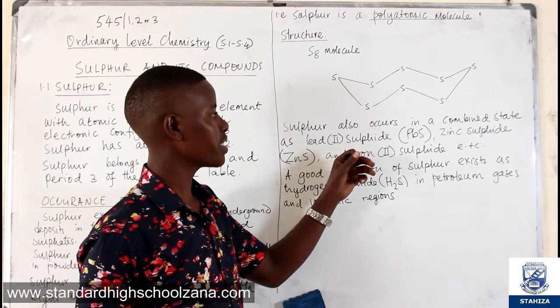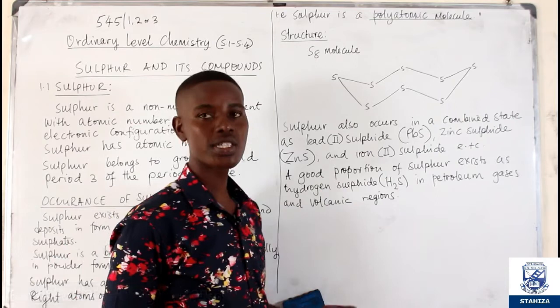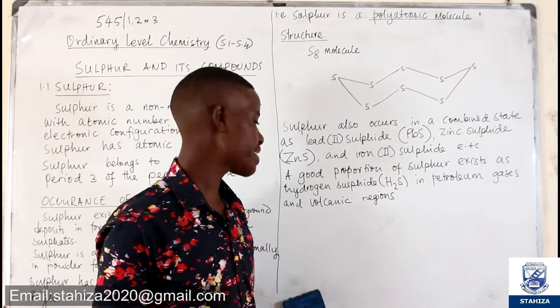The ores of sulfur include lead(II) sulfide, zinc sulfide, iron(II) sulfide, and iron disulfide — and those are the ores of sulfur we are going to be talking about today.